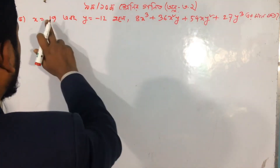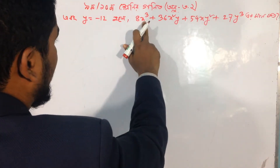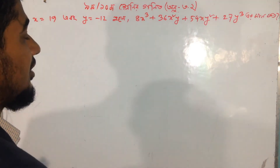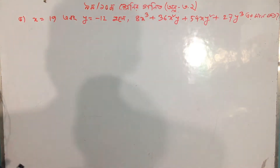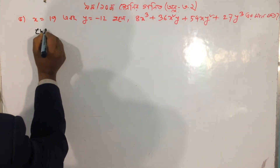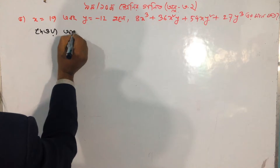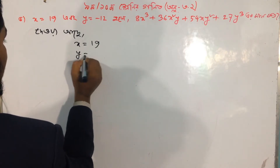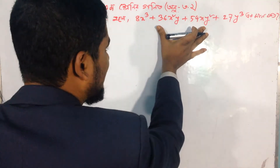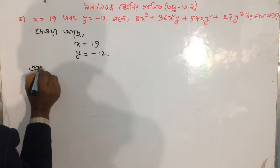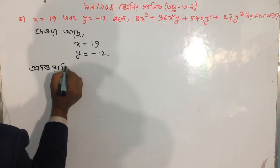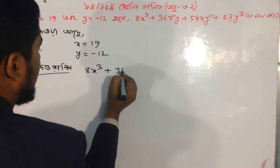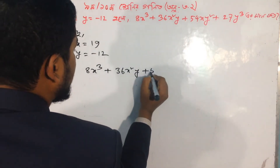With x equal to 19 and y equal to minus 12, we substitute these values into the expression to evaluate it.